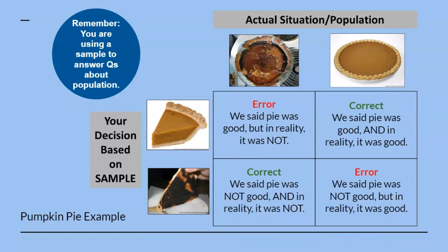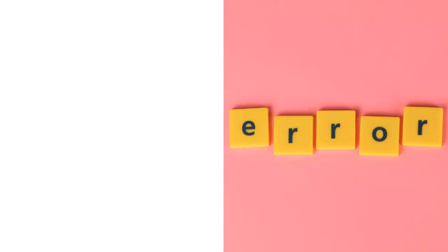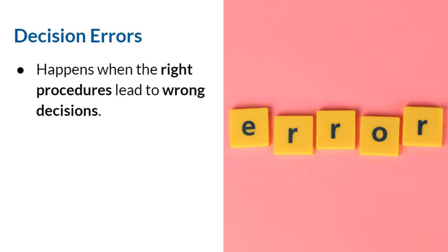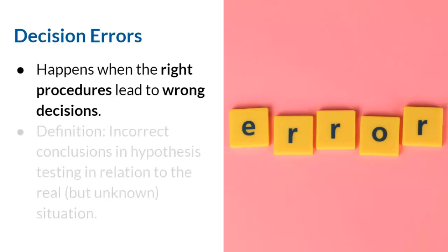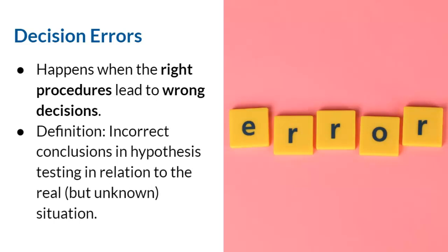Basically, when conducting a hypothesis test, there are two outcomes that are correct, meaning you made the correct decision based on the sample, and there are two outcomes that are errors, meaning that you made the incorrect decision based on the sample. Decision errors happen when the right procedures lead to the wrong decisions. As a researcher, you can control the sample, but you cannot control the population. The reality is that we do not know the entire population we are studying, and sometimes mistakes can happen.